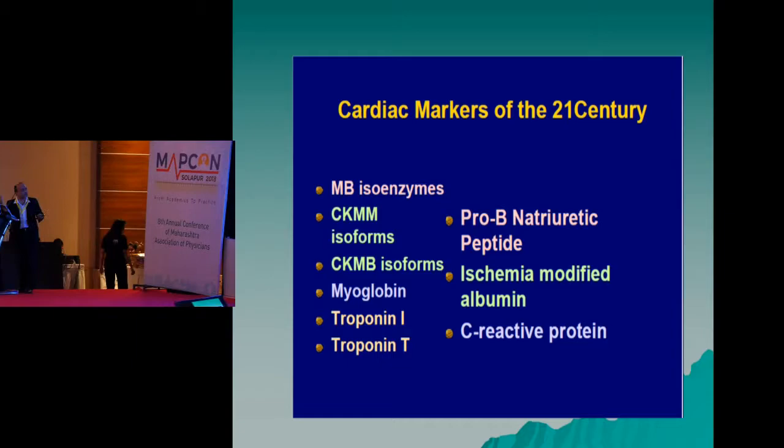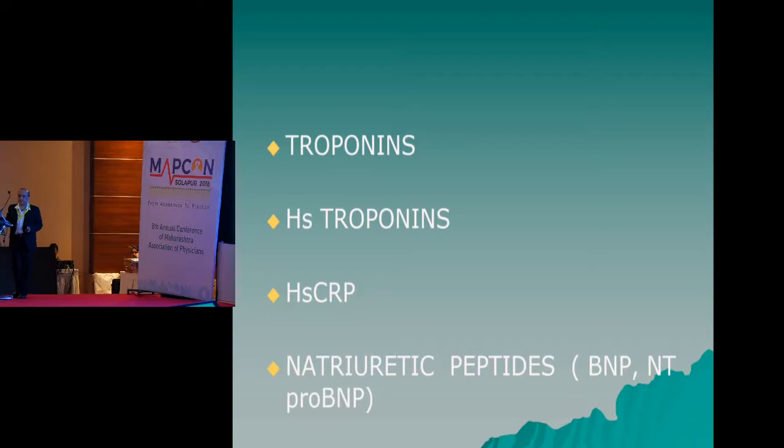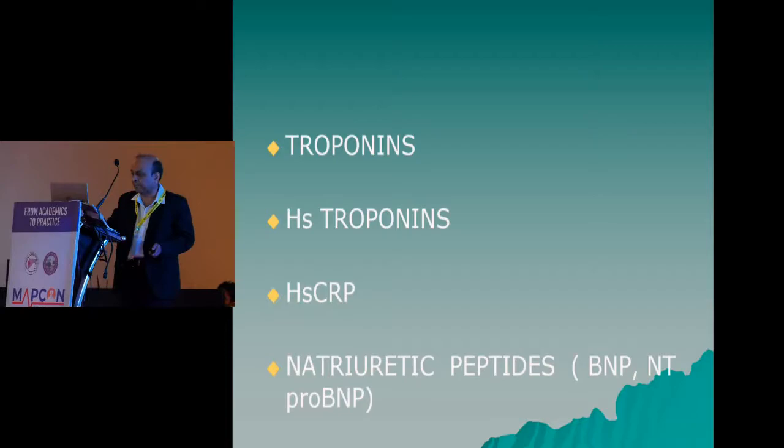These are the markers of the 21st century, but for the want of time I'll restrict myself to only a few where we have robust data, which are commercially available and clinically useful. We are going to concentrate on only four biomarkers: troponins, high-sensitive troponins, HSCRP, and natriuretic peptides.